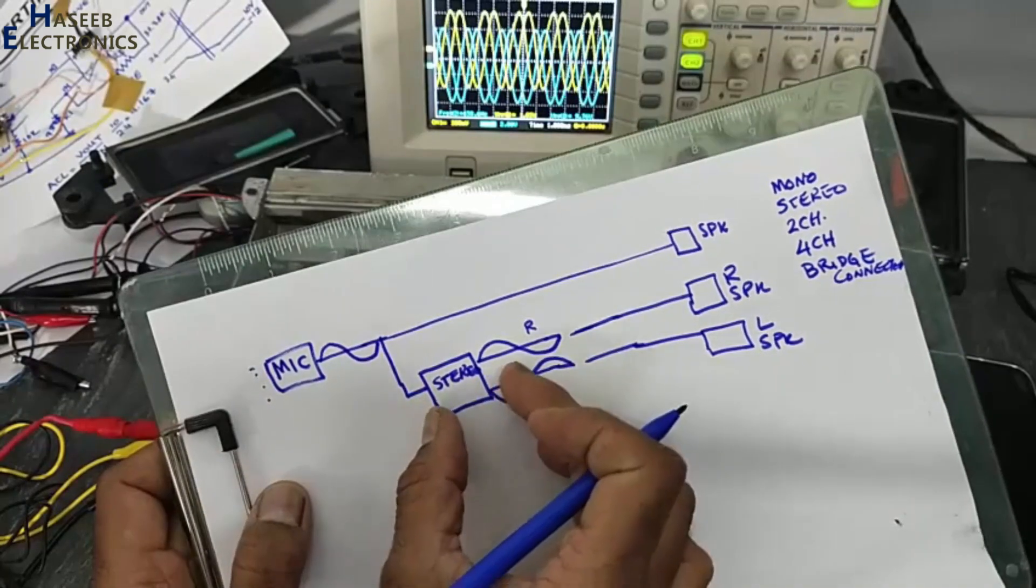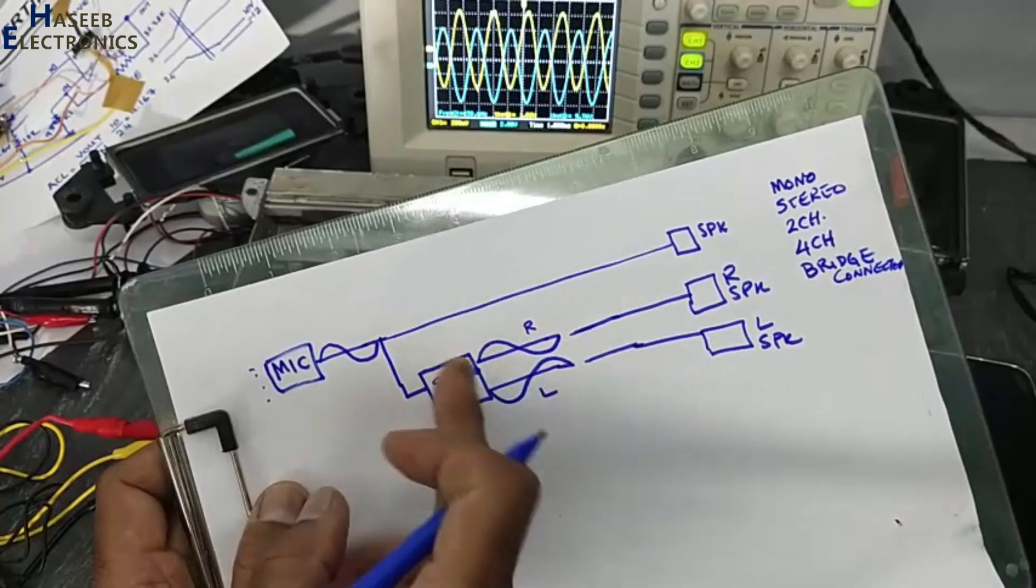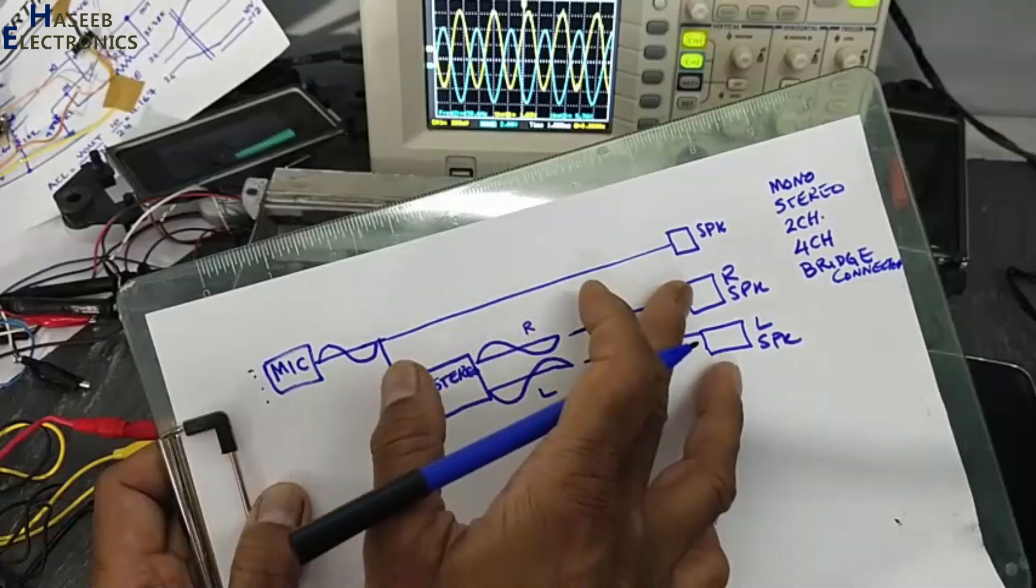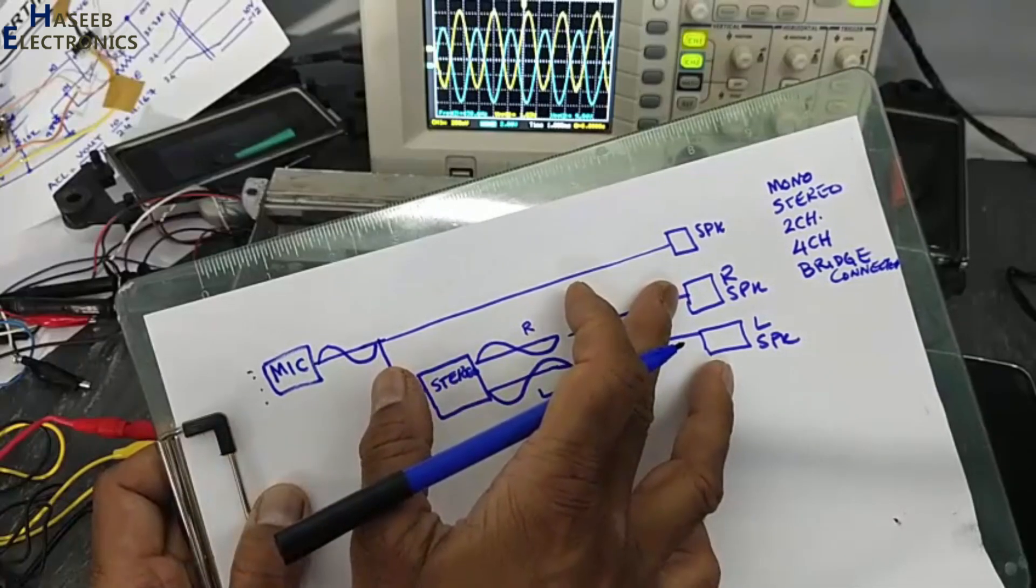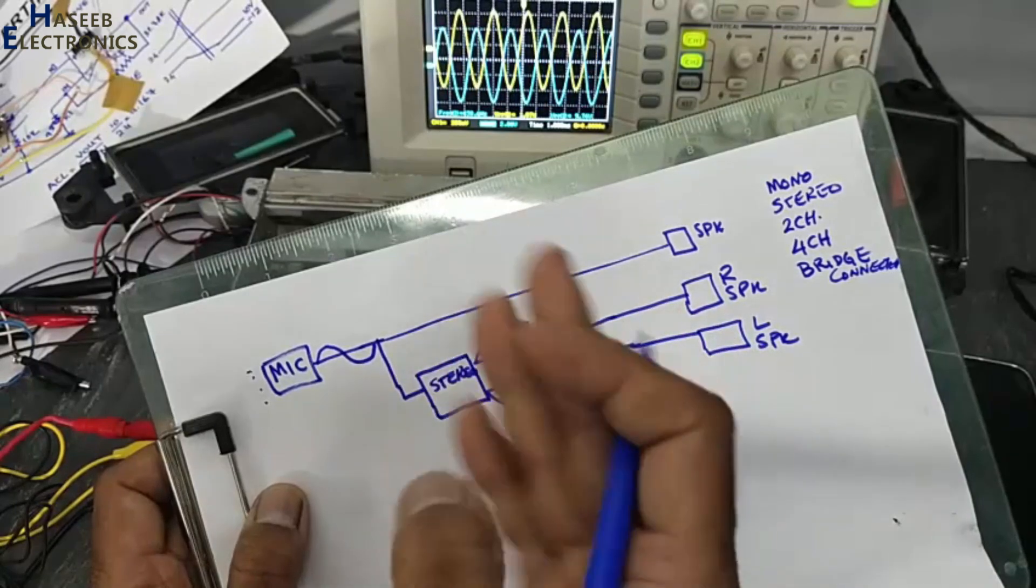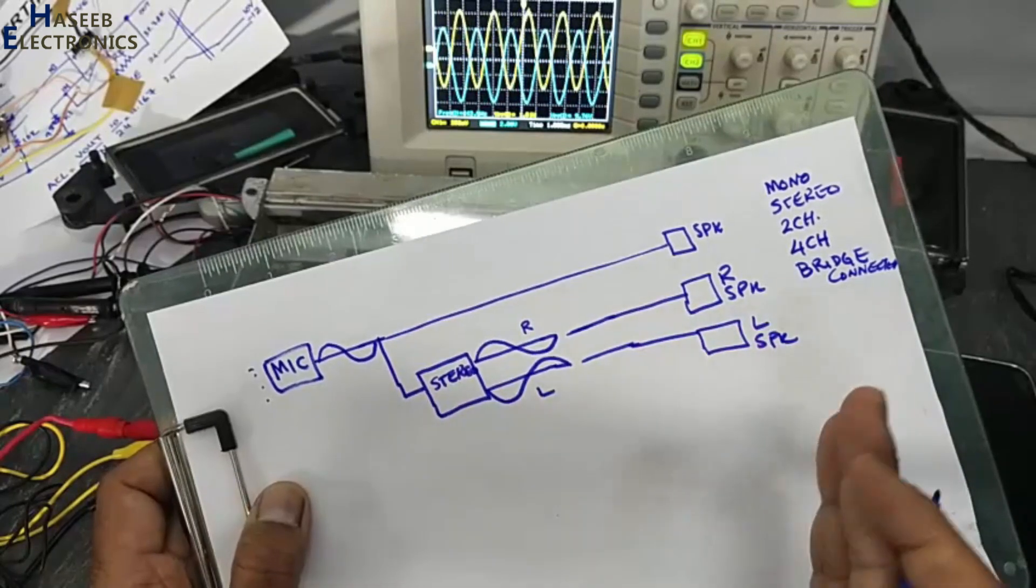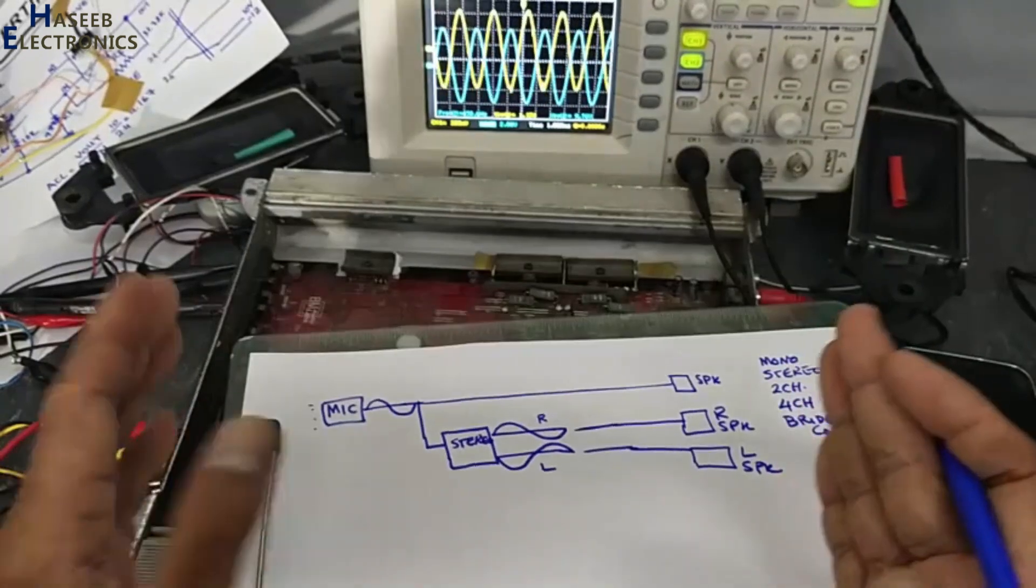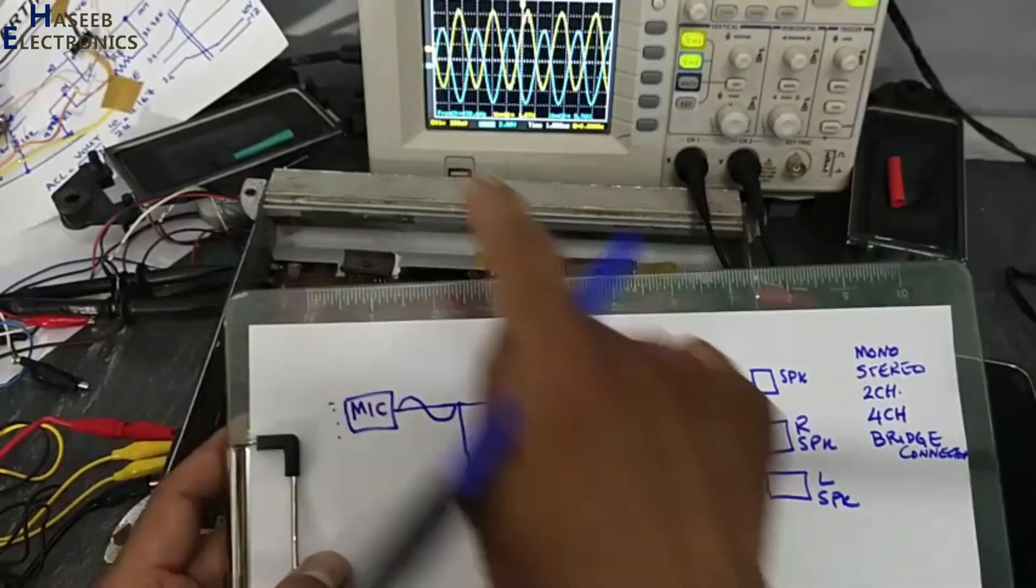The stereo converter splitter will split this signal in opposite direction so there will be a stereo sound effect. These diaphragms will work opposite to each other. Here the diaphragm will go outside and the other inside, so heavy sound effect will be there.